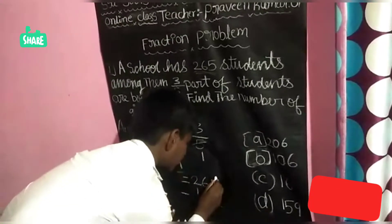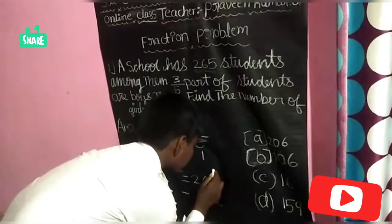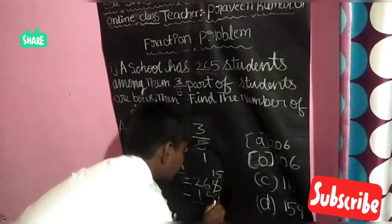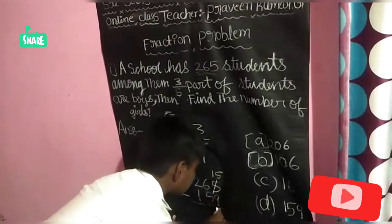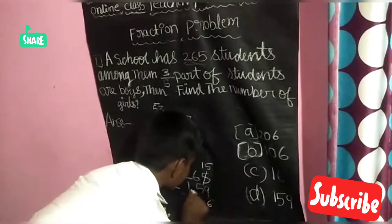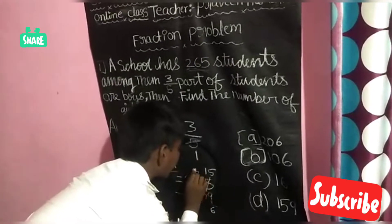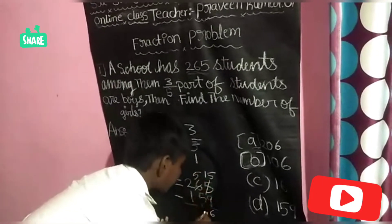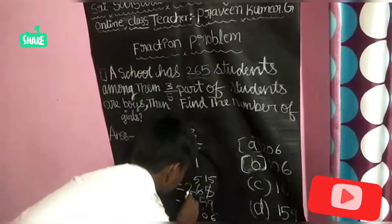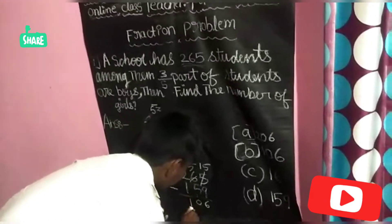This will be small, this will be big, that's why we have to take the borrow. Here will be 15; 15 minus 9 is equal to 6. Here will be 5; 5 minus 5 is equal to 0. 2 minus 1 is equal to 1.